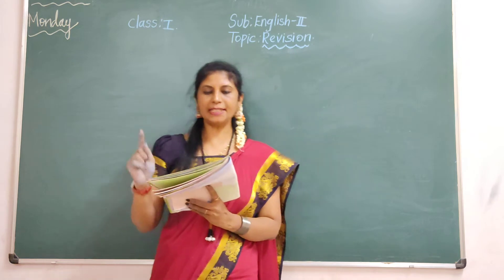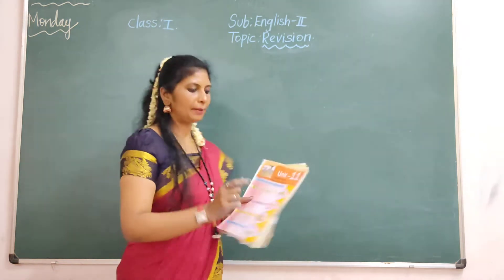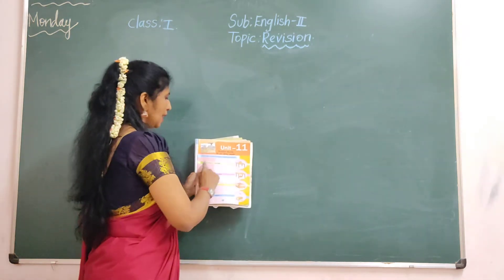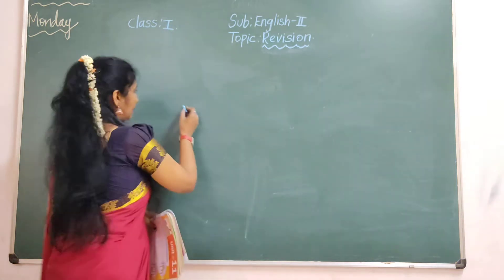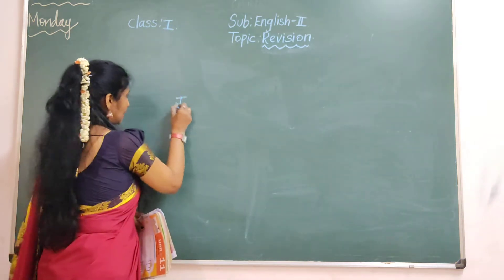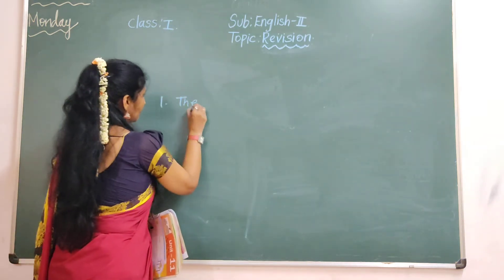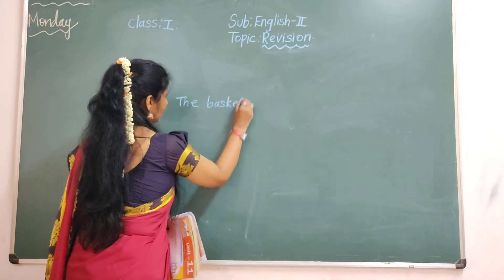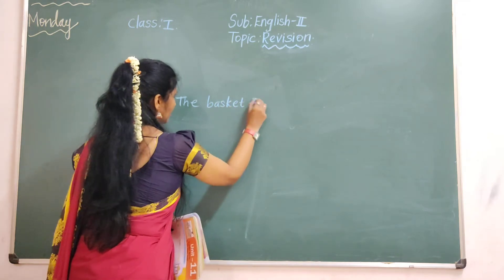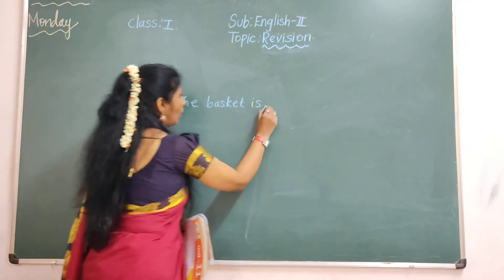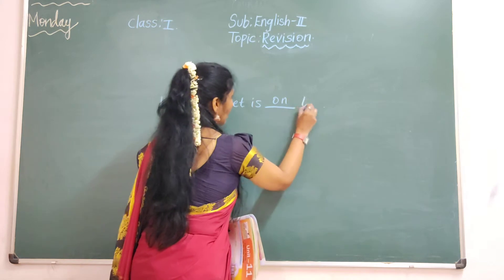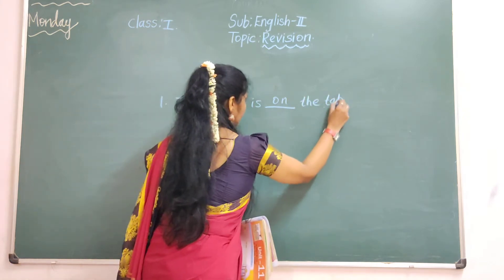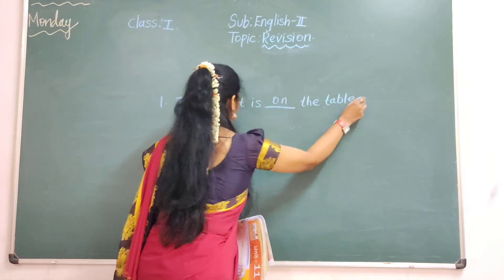The basket is dash the table. Look at the picture — the basket is on the table. On the table.